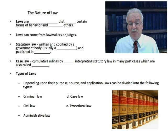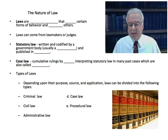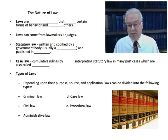Laws can come from lawmakers or from judges. Statutory law is written and codified by a government body — usually a legislature — which at the federal level is Congress, at the state level is the state legislature, and at a local level could be a town council. These statutory laws are published in law books so everybody can know about them. By 'codified' I mean they are organized by subject matter, with numbers and section designations. That's statutory law.